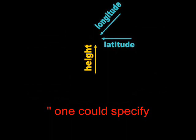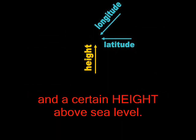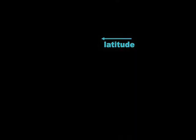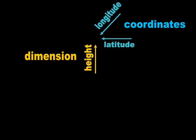One could specify that a point was at a certain latitude and longitude and a certain height above sea level. What? Height is a coordinate? In science, we know better. The coordinate which runs up and down is called altitude. This is subject matter that we typically cover in high school.